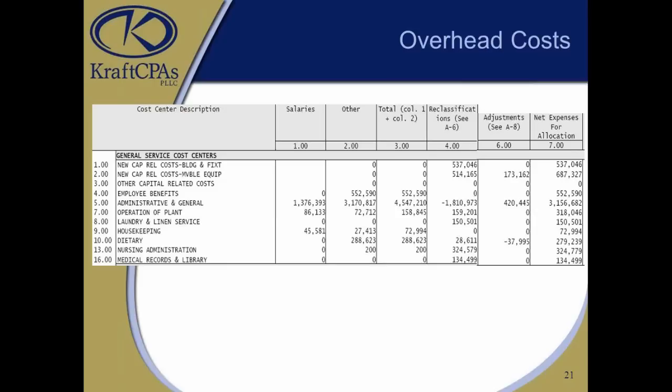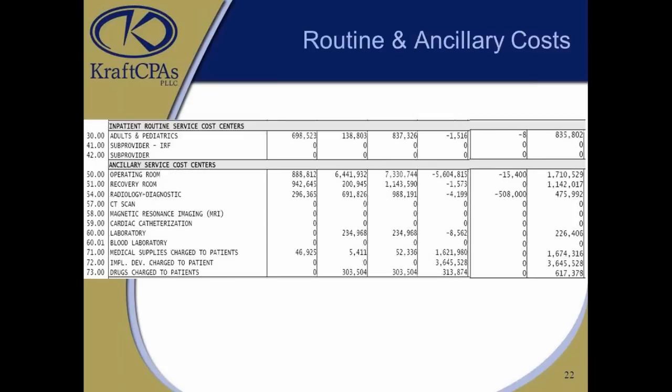Column 6 represents adjustments — removing non-allowable costs. Column 7 is your net expense or allowable costs. Moving to slide 22, we're looking at the true revenue-producing areas of the hospital. Line 30 is adult and pediatrics — the true medical surgical line, costs related to patients in inpatient beds. Lines 50 through 73 are all ancillary departments and costs related to them, covering the OR down through all radiology departments, supplies, and drugs.